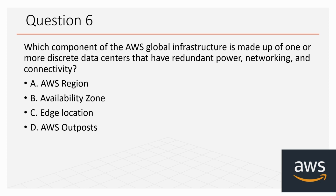Question six: which component of AWS global infrastructure is made up of one or more discrete data centers that have redundant power, networking, and connectivity? The options are AWS Region, Availability Zone, edge location, and AWS Outposts. The correct option is Availability Zone. An AZ is one or more discrete data centers, each with redundant power, networking, and connectivity, housed in separate facilities. When you write any resource in a data center, it gets replicated to multiple data centers to increase availability.